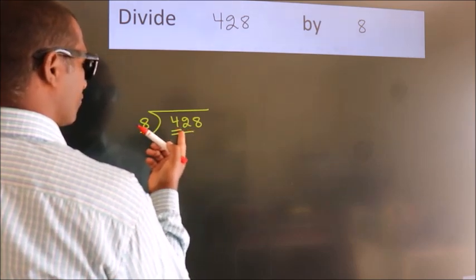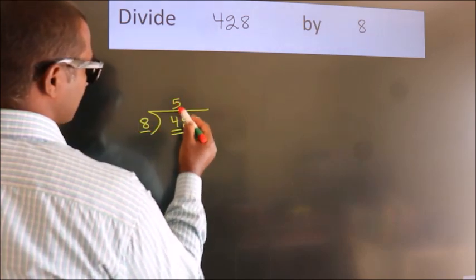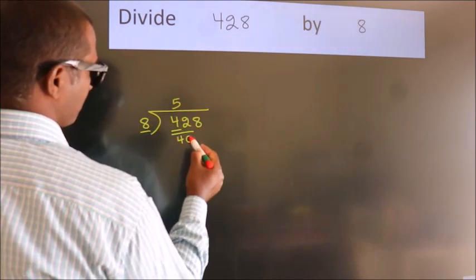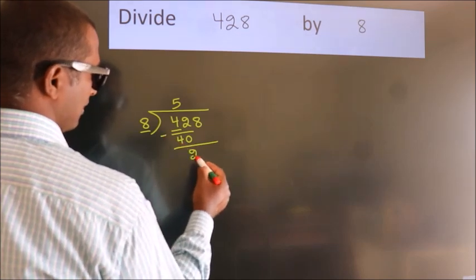A number close to 42 in 8 table is 8 fives 40. Now we should subtract, we get 2.